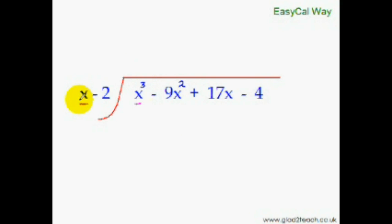x cube divided by x will give us x square and we have the first term of the answer. Now as you can see that this step remains the same in both the usual way, that is long division, and your easy cal way.